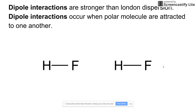The next interaction is dipole interactions. They're stronger than London dispersion, and they're a result of polar bonds in molecules. If you have a big electronegativity difference, you can have a polar bond.